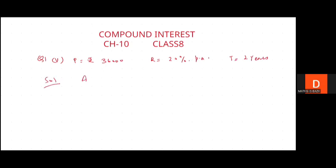Amount is always equal to Principal times (1 + R/100) raised to the power n. Amount is equal to rupees 36,000 times (1 + 20/100)². Take the LCM 100.